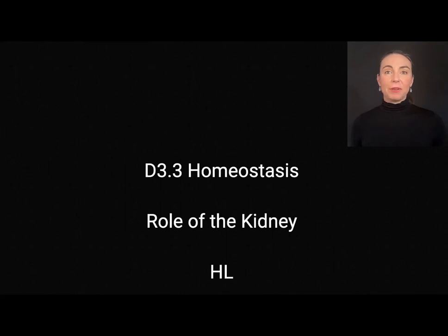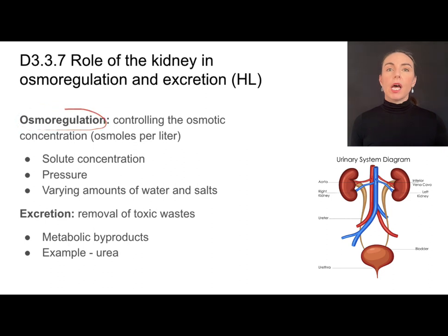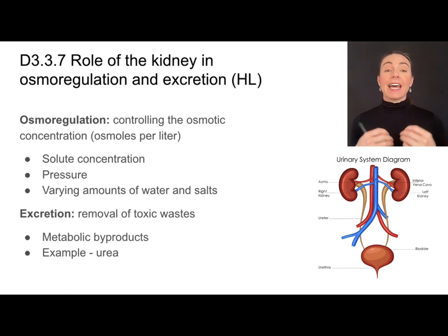This is the higher level content from D3.3 on homeostasis and we'll be focusing in on the role of the kidney. Humans have two kidneys and the role of the kidney is twofold. First thing it does is it's going to help with osmoregulation. Osmoregulation is controlling the osmotic concentration, which is defined as osmols per liter. I like to think about it as the total solute concentration in a cell, and it's very important that that is controlled.